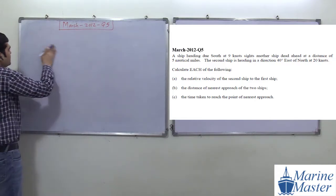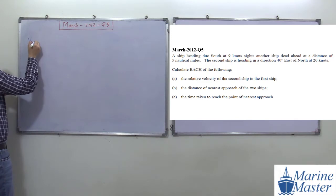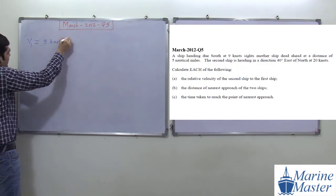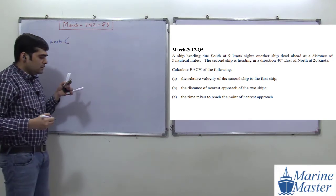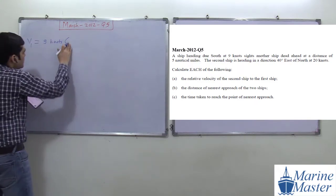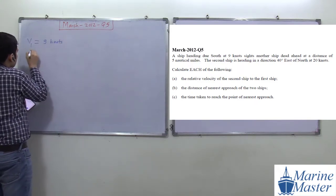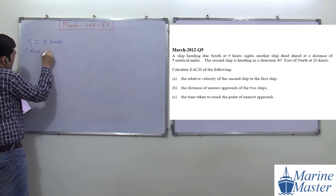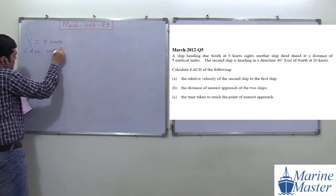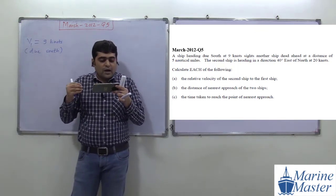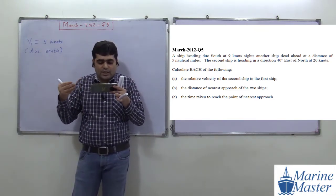Here we call the first ship V1. What is the value of V1? First ship: nine knots, in the direction due south. Try to see the scenario — this is about the first ship.